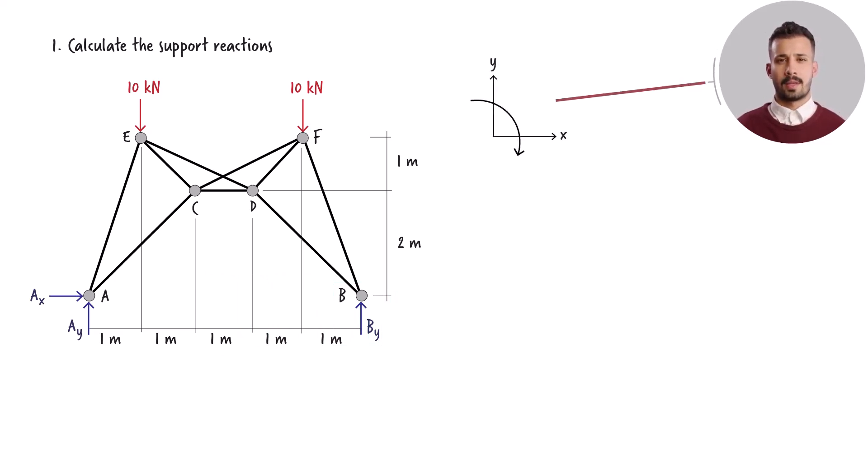Utilizing this sign convention, we can formulate three static equilibrium equations for the entire truss. The total forces acting in the x direction should balance to zero. The combined forces in the y direction should also equate to zero. Furthermore, the sum of the moments taken with respect to point A must add up to zero. Upon solving these equilibrium equations to determine the unknown reaction forces, we obtain the results.